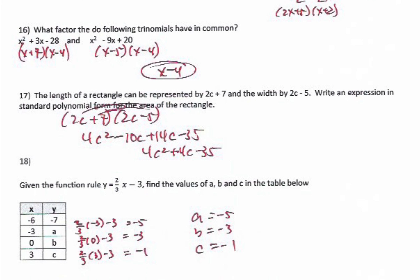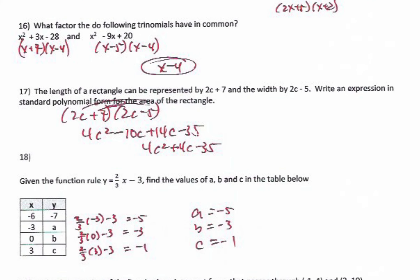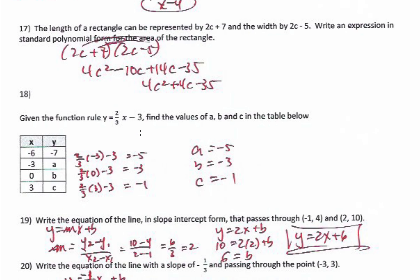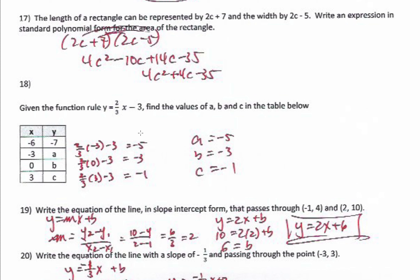What factor do the following trinomials have in common? Factoring the first gives (x plus 7)(x minus 4). Factoring the second gives (x minus 5)(x minus 4). The factor they have in common is (x minus 4).